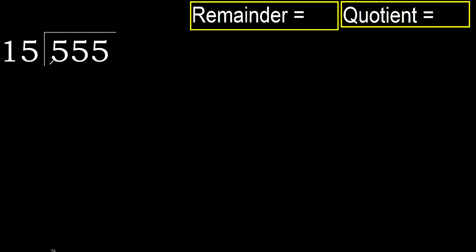555 divided by 15. 5 is less, therefore next 55. 55 is not less, therefore with 55. 15 multiplied by which number is nearest to 55?